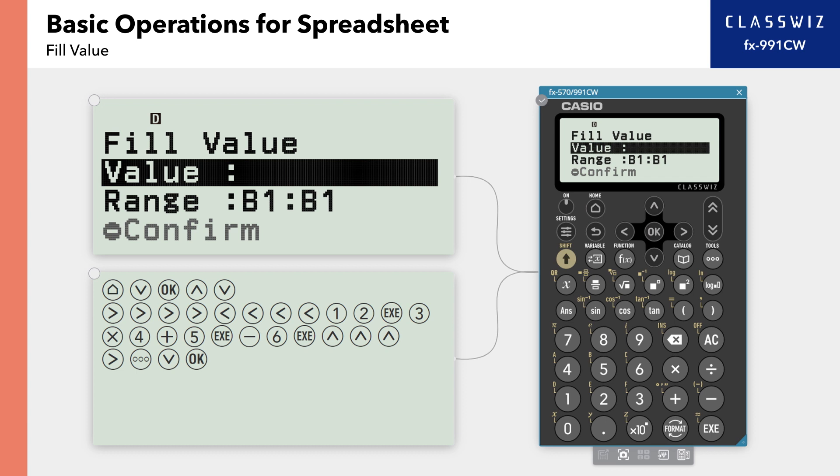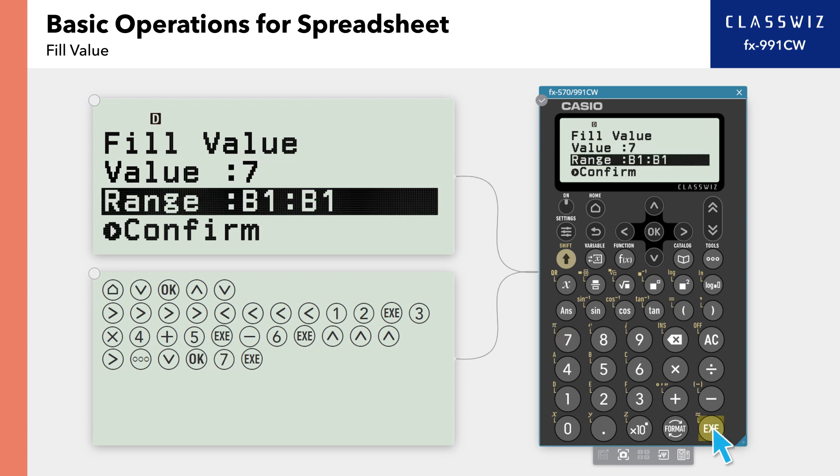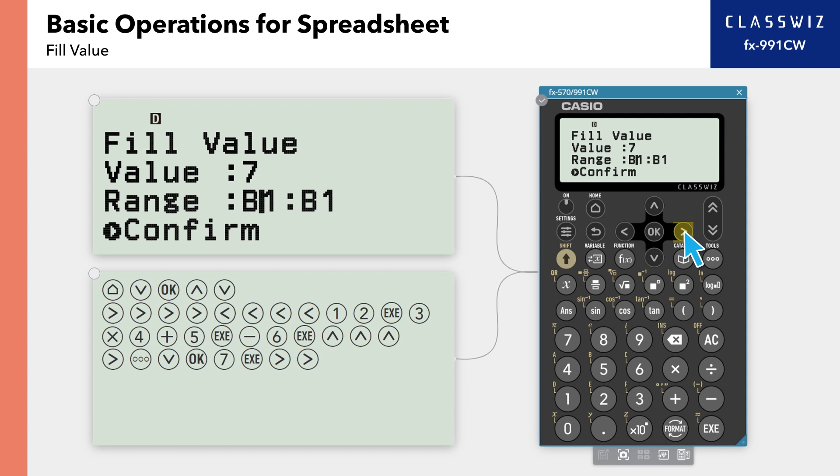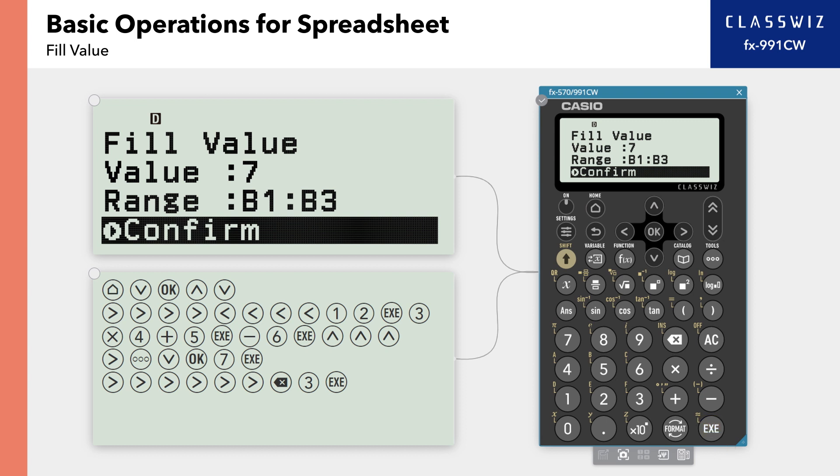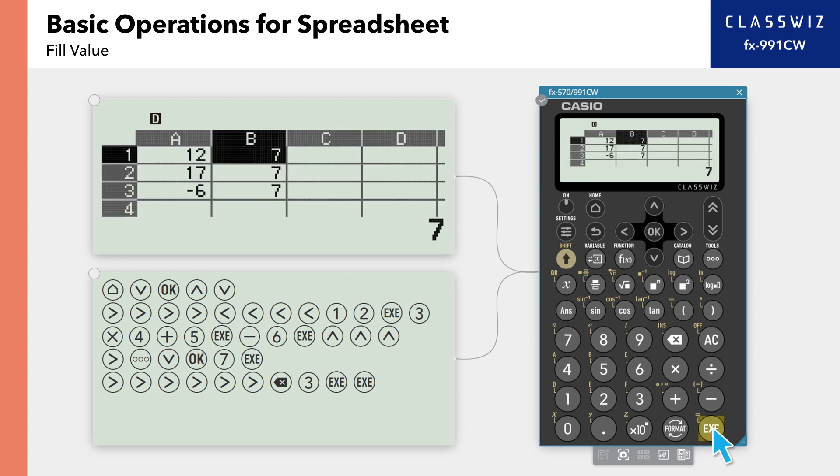For Value, enter the number 7. For Range, enter the range of cells B1 to B3 for batch input. Move the cursor to confirm and press Execute. The number 7 is now input in cells B1 through B3.